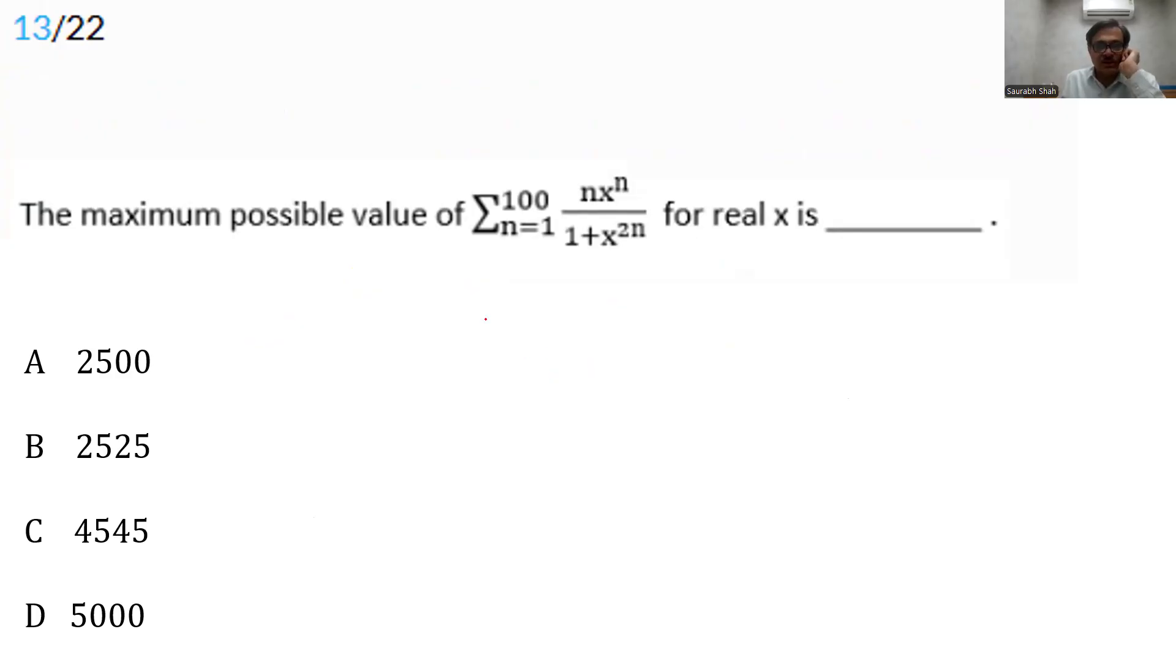A good question here on algebra. First thing we do is put this x raise to n down. Remember this is the square. So put it down. Bring that down in the denominator. So we are left with sigma n is equal to 1 to 100, n upon 1 upon x raise to n plus x raise to n. This is your key part.